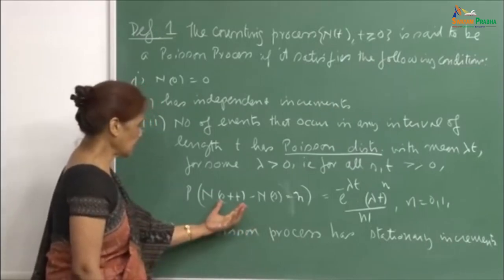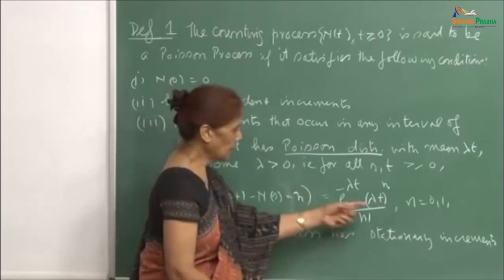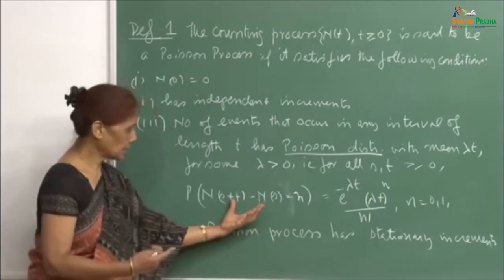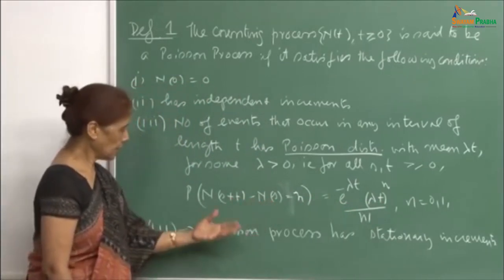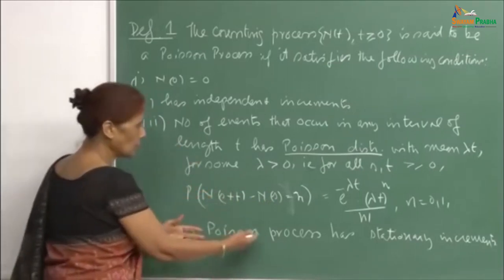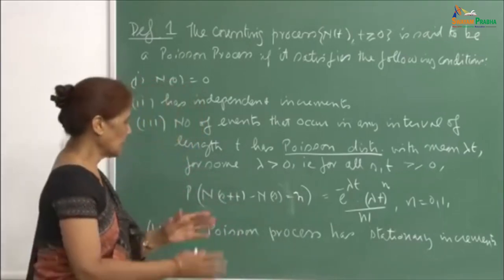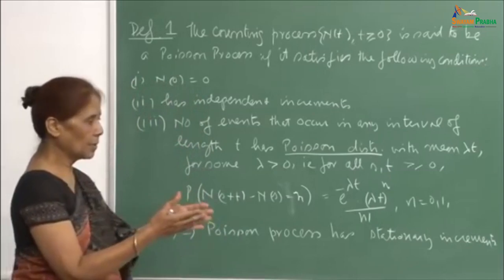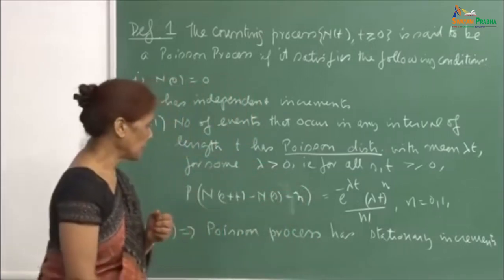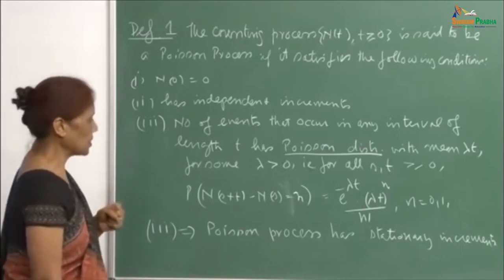Since this probability depends only on the length of the time interval t, and not on when the counting process is started — the beginning of the interval — we can immediately conclude that the process also has the stationary increments property. It does not matter when you started counting; only the length of the interval matters. This is our definition of a Poisson process.